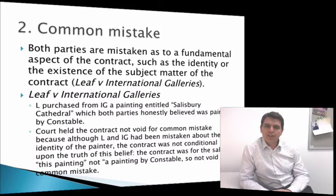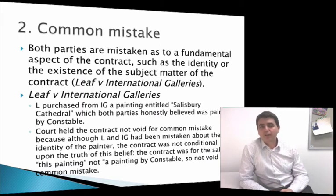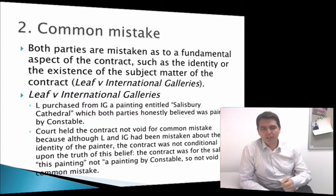Having dealt with unilateral mistake, we now need to look at the other two kinds of mistake: common mistake. Common mistake occurs where both parties are actually mistaken about something very important to the contract, something of primary importance to the contract.